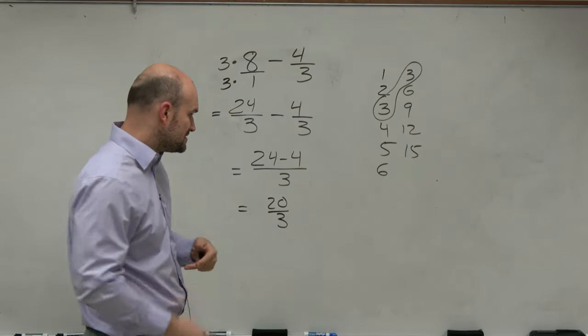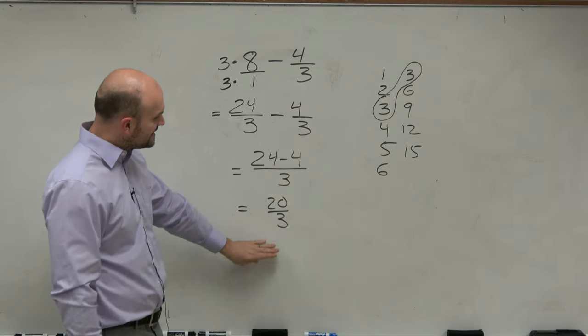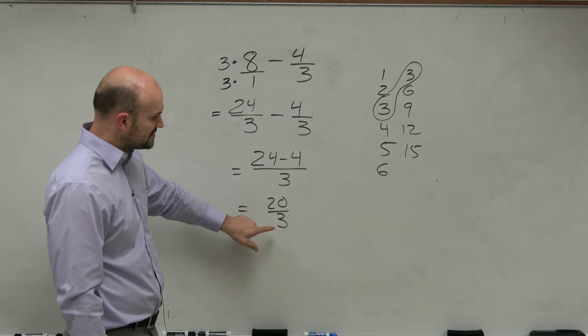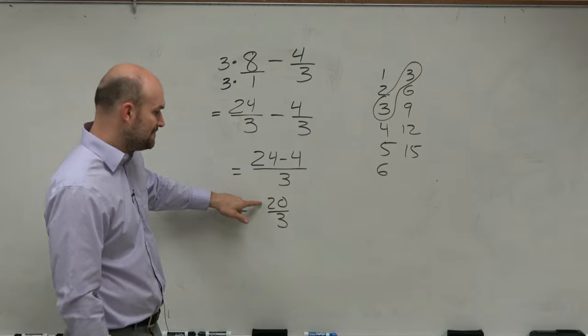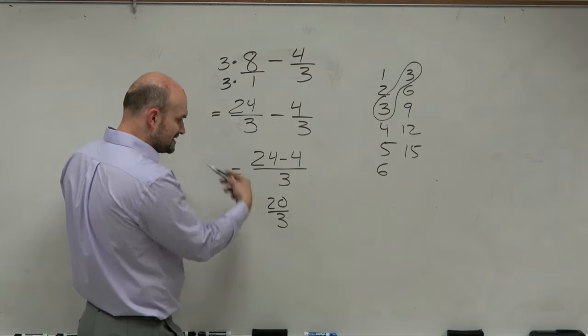In my class, I prefer improper fractions. However, we could identify this as a mixed number by asking ourselves, how many times does 3 evenly divide into 20? And that's the least number of times it divides into there until we go over.